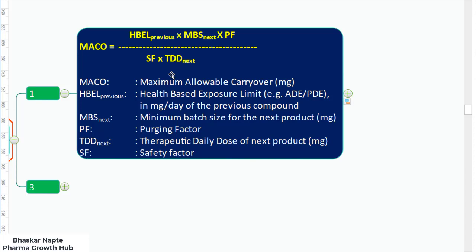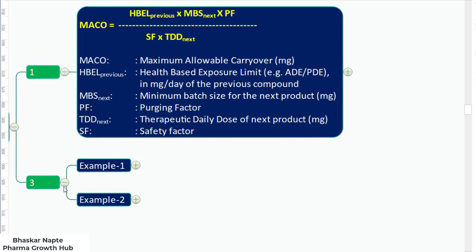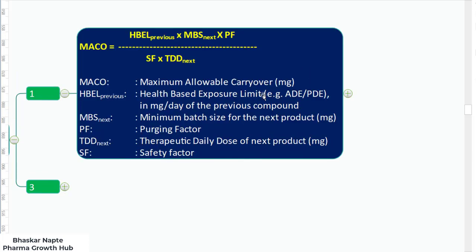PF is a new addition according to this revised guideline and stands for purging factor, which we will discuss after explaining the calculation formula. There is also a safety factor, which was already part of the earlier calculation. TDD next stands for therapeutic daily dose of the next product. For example, if your next product is paracetamol API, TDD next is the total allowable dose of paracetamol within a day. If the highest strength tablet is 750 mg and can be taken twice a day, then 750 × 2 = 1500 mg becomes the TDD next used in the MACO calculation.